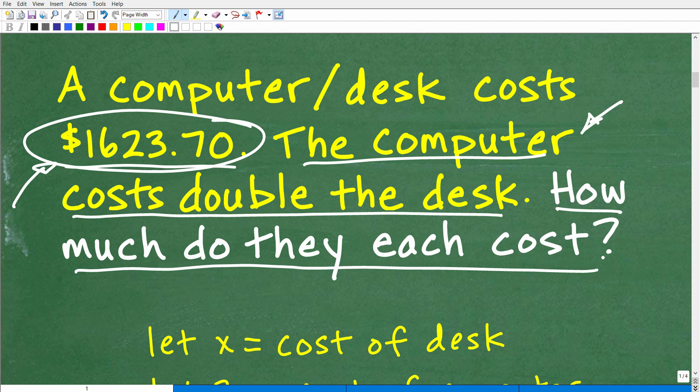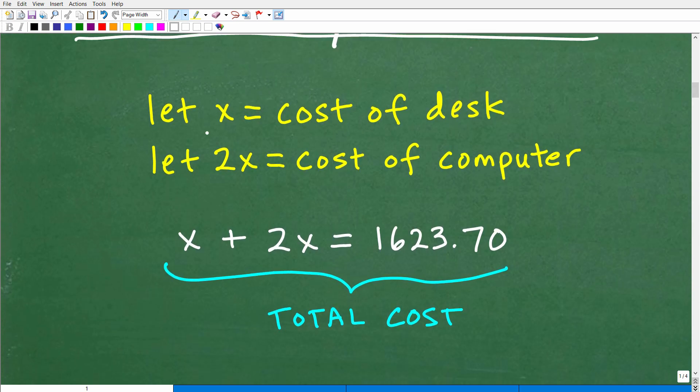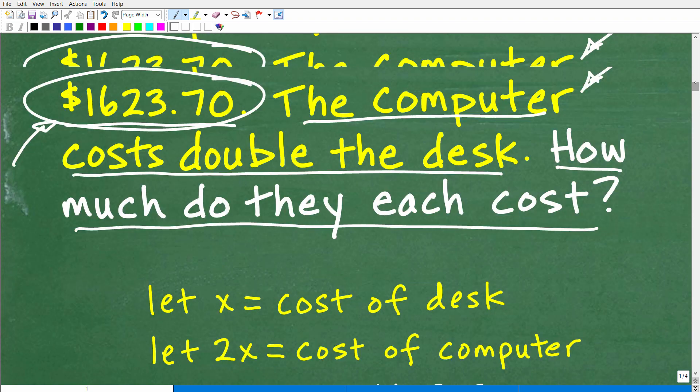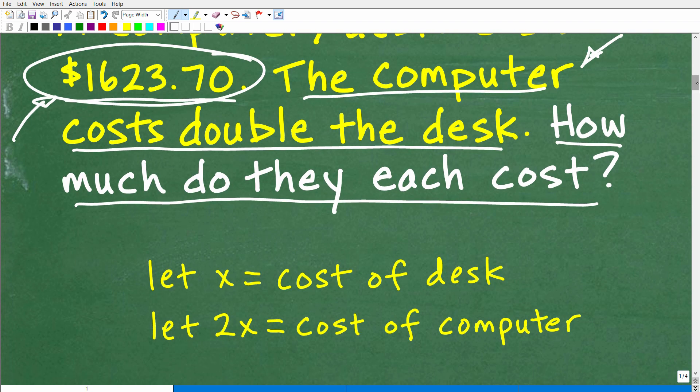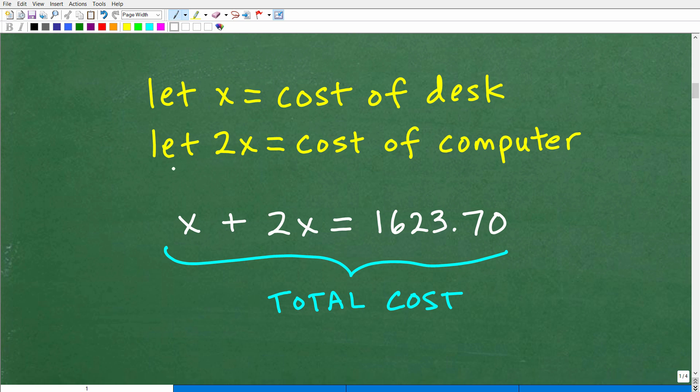In algebra, we have variables, right? So variables represent a value. So we need to kind of establish some variables. And this is one way you could do this problem, probably the easiest approach to do this problem, is we're going to let the variable x equal the cost of the desk. We don't know what the cost of the desk is, so we'll let x equal the cost of the desk. But we know that the cost of the computer is twice that of the desk. How do we know that? Because it says so right here in the problem, the computer costs double the desk. So we can kind of write this variable here for the cost of the computer is 2x, which is two times the cost of the desk. So if x is the cost of the desk, then 2x is the cost of the computer.